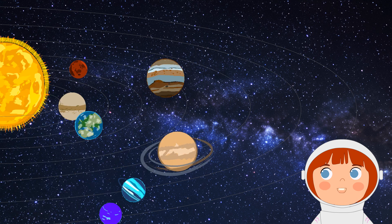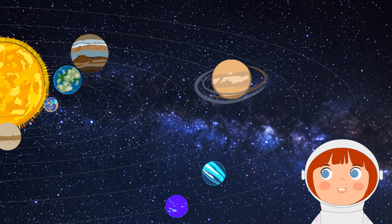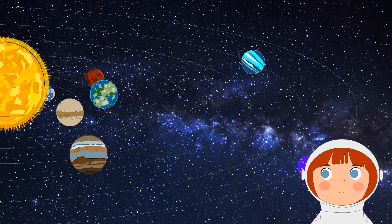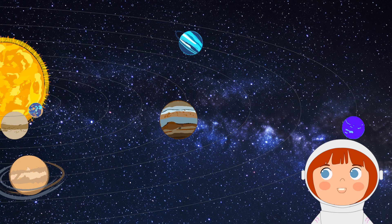Our solar system consists of eight planets orbiting around the Sun. The names of the planets are Mercury, Venus, Earth, Mars, Jupiter, Saturn, Uranus and Neptune.